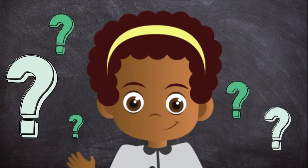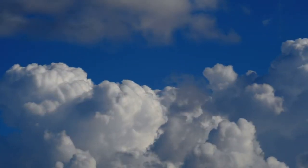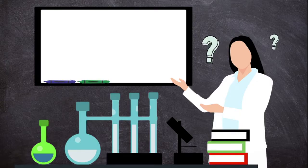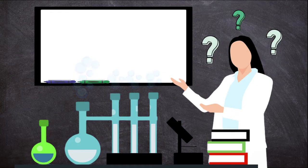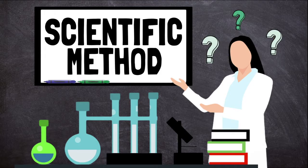Have you ever had a question about the world around you? Ever wondered why the sky is blue, or why the grass is green? Scientists ask questions all the time. Then they follow steps to find the answer. This method for finding answers to science questions is called the scientific method.